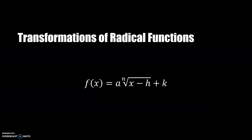The general equation for a radical function is shown here. When we have a number attached to the x, we call that a horizontal translation, and it is tricky — the horizontal translation is going to have the opposite sign from what we expect when we first look at it, because of that negative sign in the radical. Then we have a vertical translation, which is straightforward and does exactly what we expect; it has the same sign as the direction we expect it to travel.